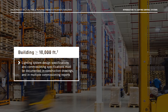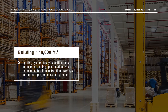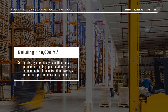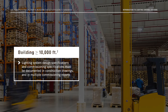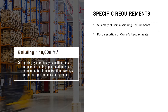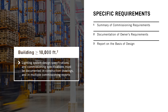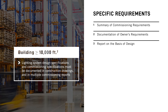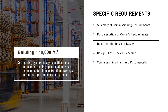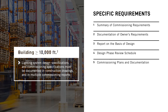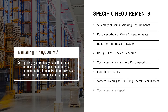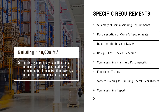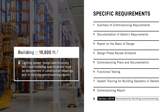The lighting system design specifications and commissioning specifications must be documented in construction drawings and in multiple commissioning reports. Specifically, you'll have to include documentation of owners' requirements, a report on the basis of design, a design phase review schedule, commissioning plans and documentation, functional testing, system training for building operators or owners, and the commissioning report. More information on all of these can be found in Section 120.8 of the Energy Code.